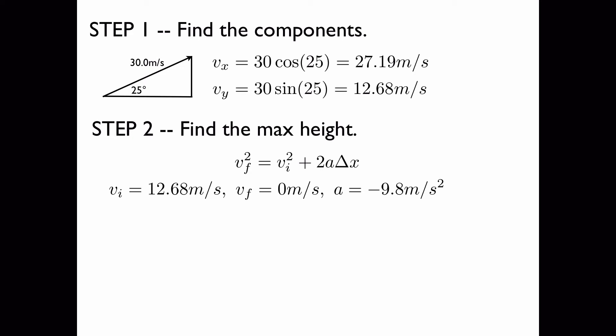Because the x and the y component are independent, we can just work with the vertical component and use the equations of one-dimensional motion. Rearranging the equation, we can solve for the displacement delta x. Plugging in the known information, this gives 8.2 meters. This is the maximum height of the projectile.